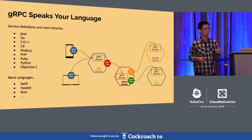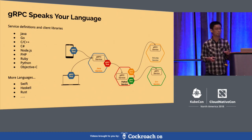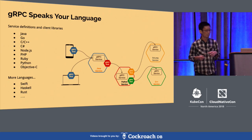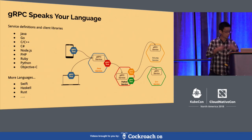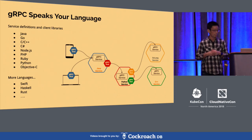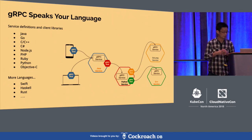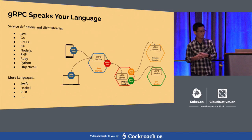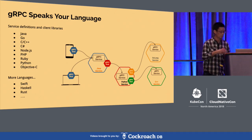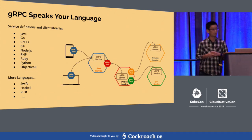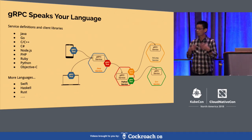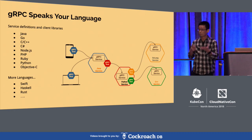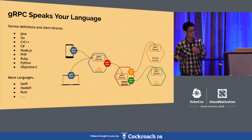gRPC supports a lot of languages, about 10 now, and we are trying to add more. This is a very typical way of architecting your application, where you can string together services and calls. You can have one service talk to another, and you can reach your browser or your laptop or any cloud around. You can certainly deploy gRPC in Kubernetes now.